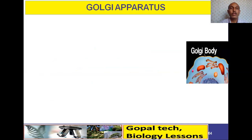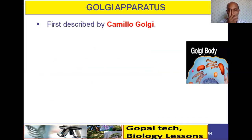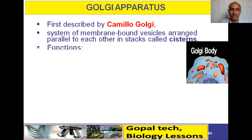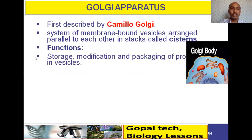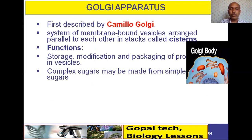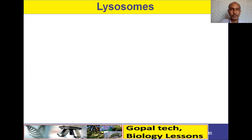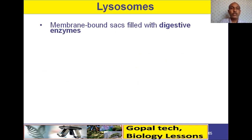The second organelle is the Golgi apparatus, first described by Camillo Golgi. It is a system of membrane-bound vesicles arranged parallel to each other in stacks called cisternae. Its basic functions include storage, modification, and packaging of proteins in vesicles. Complex sugars may be developed from simple sugars. It is also involved in the formation of lysosomes.